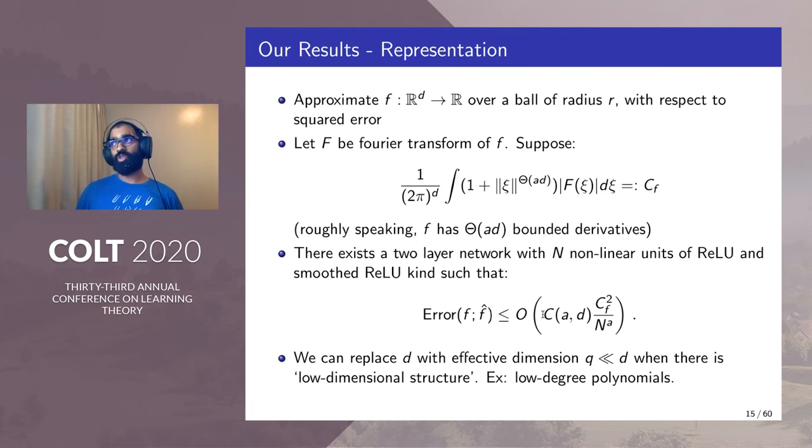For instance, if we are approximating a low degree polynomial, like quadratic polynomial, we can just replace d with 2, which is equal to q.